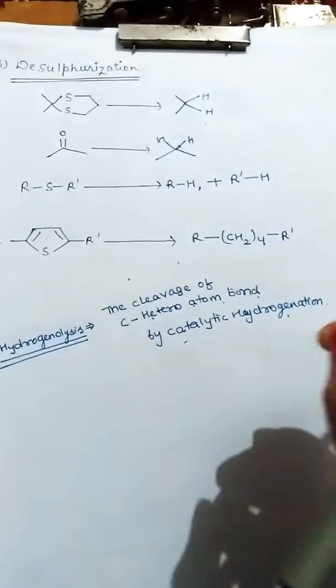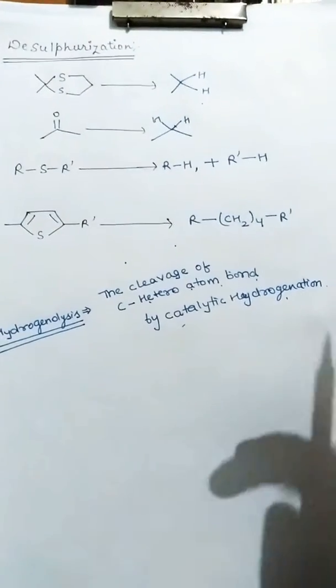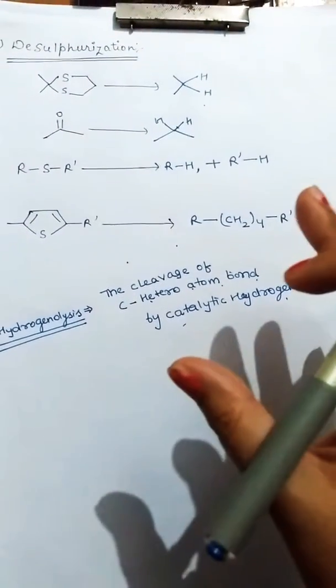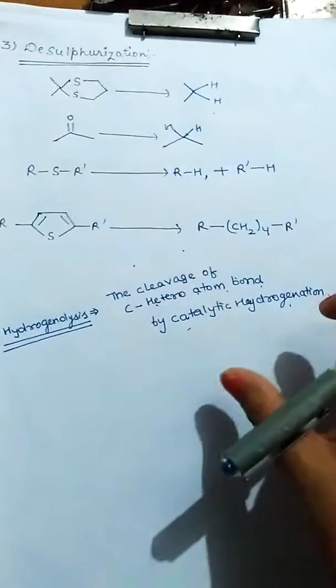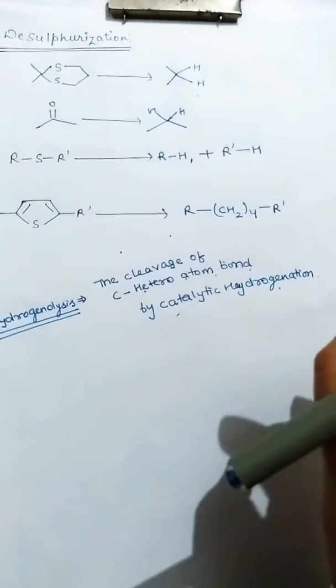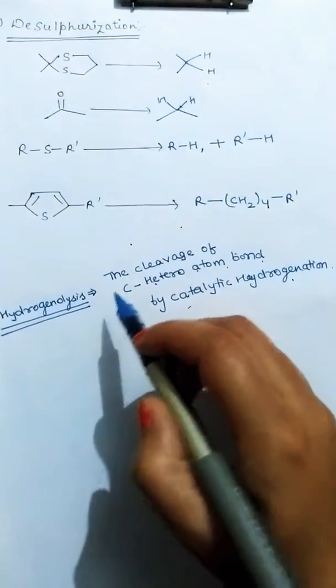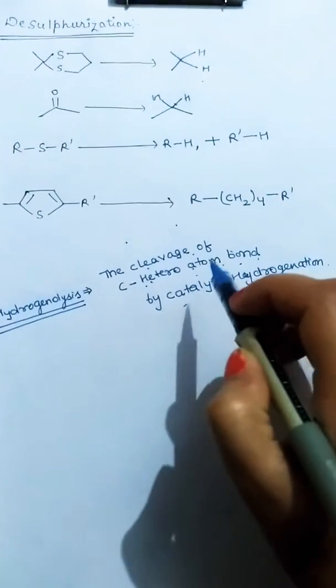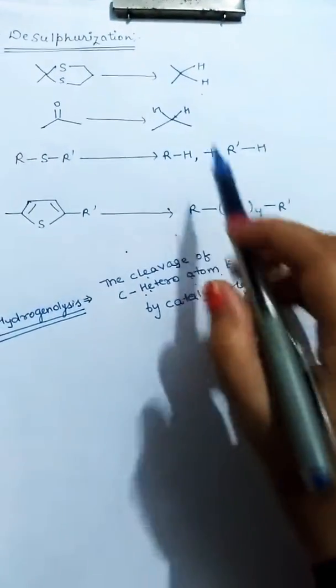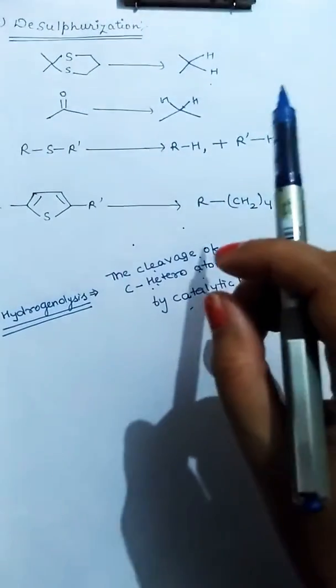Next is desulphurization. Thioalcohols, thioethers, thioamides, sulfoxides, and sulfones are desulphurized by hydrogenolysis with Raney nickel. What is hydrogenolysis? Hydrogenolysis means the cleavage of carbon-atom bonds by catalytic hydrogenation. This is an example of desulphurization.